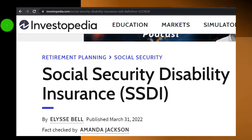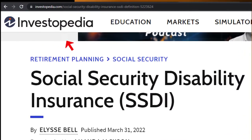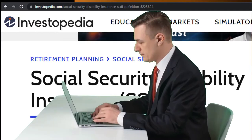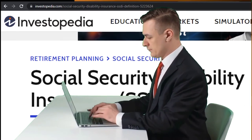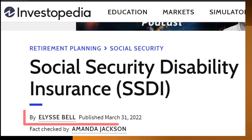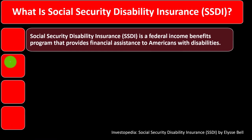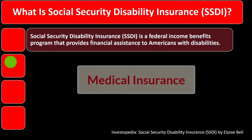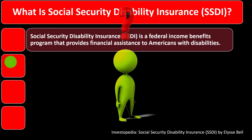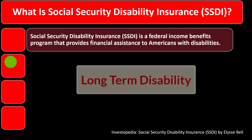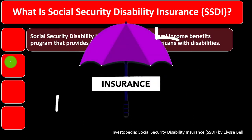Most of this information can be found at Investopedia under Social Security Disability Insurance. Check the references and resources to continue your research. This presentation is by Elise Bell, published March 31st, 2022. In prior presentations we've been looking at insurance in general, moving through medical insurance, and now we're thinking about disability insurance and its different components.